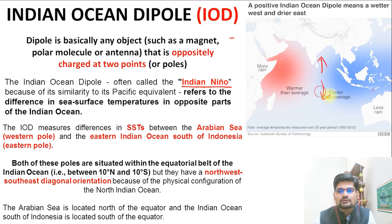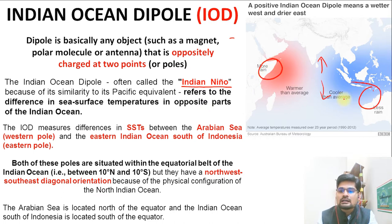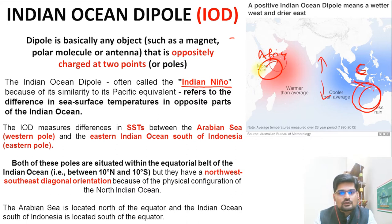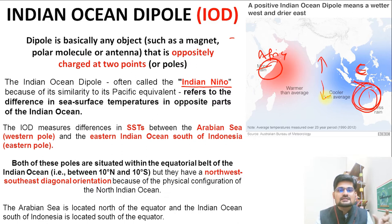There is also a polarity between the coastal areas. One part is the Indonesia and Northern Australia coast — the eastern side — and the other is the African coast on the western side. These are the two poles of the Indian Ocean in this context, and there is a dipolar movement between them.